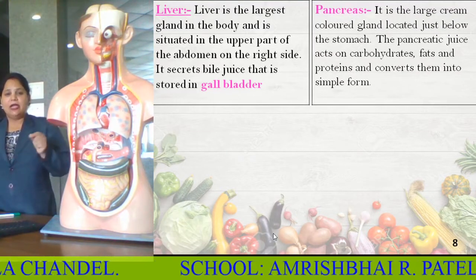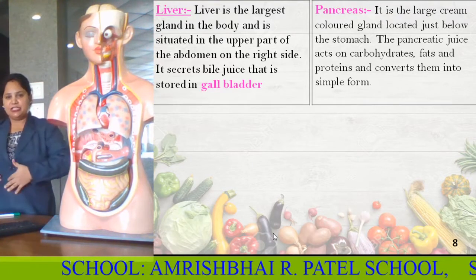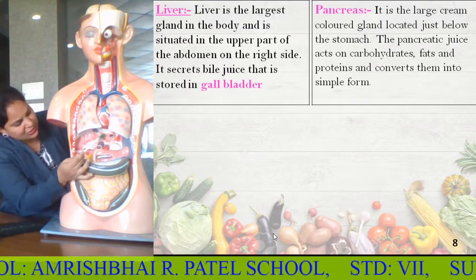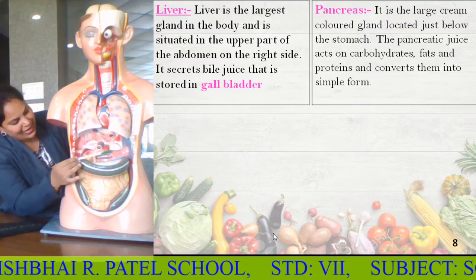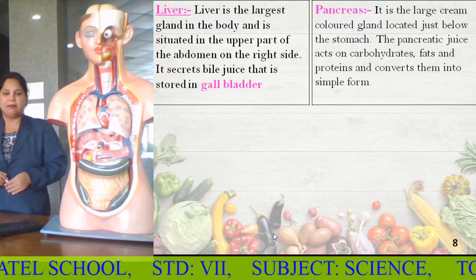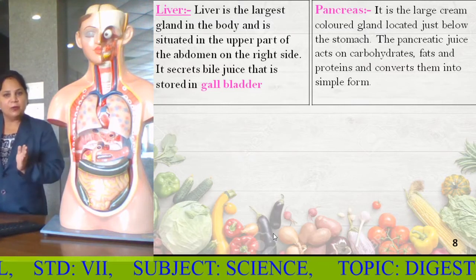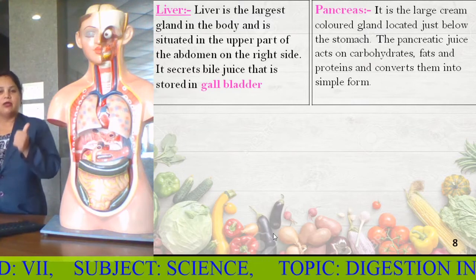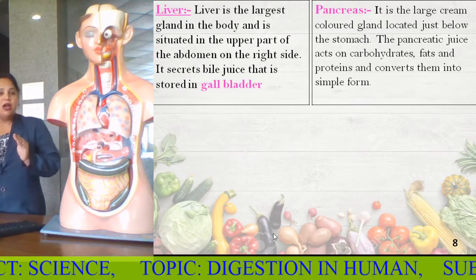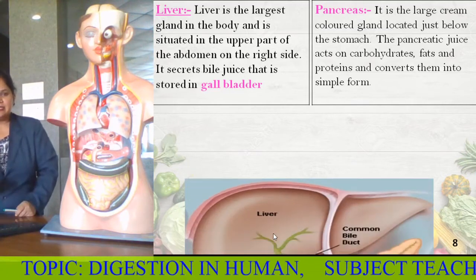One more gland is the pancreas. It is a large cream-colored gland located just below the stomach. When the stomach ends, the pancreas is present. The pancreatic juice acts on carbohydrates, fats, and proteins, and converts them into glucose, fatty acids and glycerol, and amino acids — breaking them into their simpler forms.